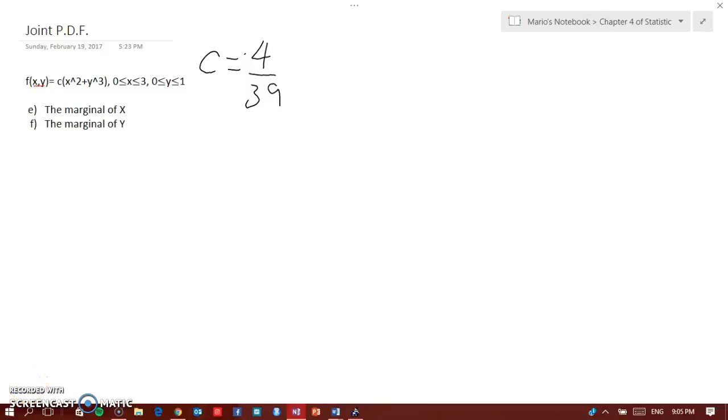Hey guys, here we have a joint PDF and we know that C is equal to 4/39. If you want to find C, you can do it, but I already had a video posted on that. Here we are concerned about finding the marginal X and Y.